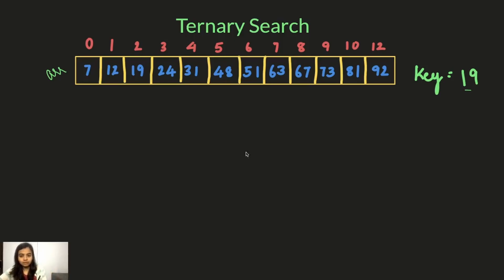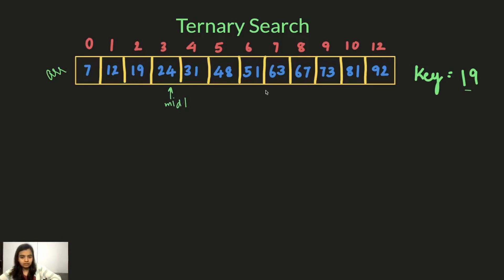First, we find two indices — let's call them mid1 and mid2. We'll have formulas to calculate these. Mid1 is somewhere in the first third and mid2 is somewhere in the second third. The first thing we do is check if either of these two positions is equal to the key.